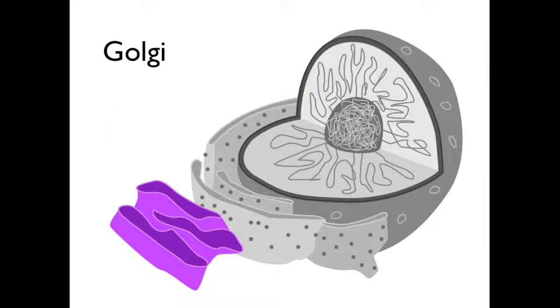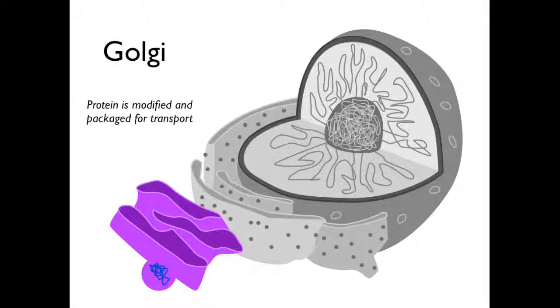This protein then moves to the Golgi apparatus. As the protein moves through the lumen of the Golgi, it is modified and packaged for transport. Eventually, a transport vesicle buds off the Golgi, and the protein is ready to go wherever it needs to.